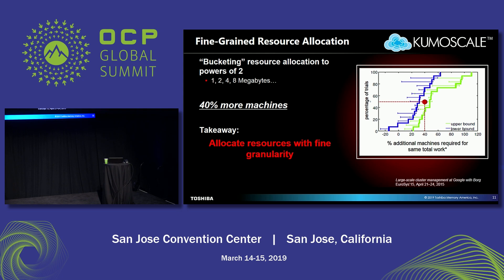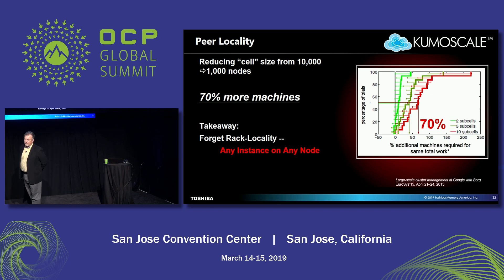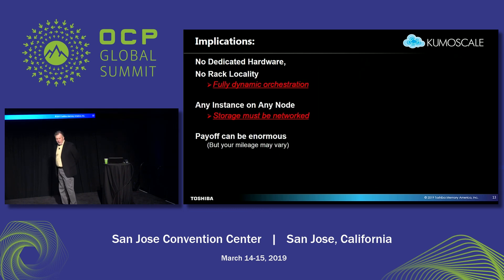At Google, when you want to run an application, you don't specify memory in megabytes or gigabytes — you specify it in bytes. You don't specify compute capacity in cores — you specify it in micro-cores. Fine-grain optimization is the point. This is the biggie: the notion of locality. If you reduce the network neighborhood of what Google calls a cell from 10,000 machines to 1,000, which is still a reasonable-sized cluster, it takes 70% more machines to do the same work. The implications are no dedicated hardware, no rack locality, and any instance has to be able to run anywhere.